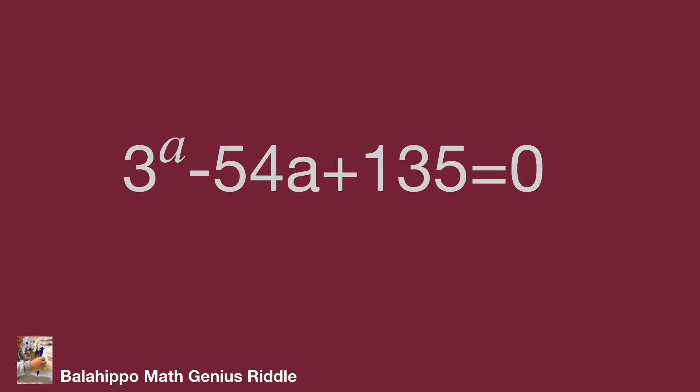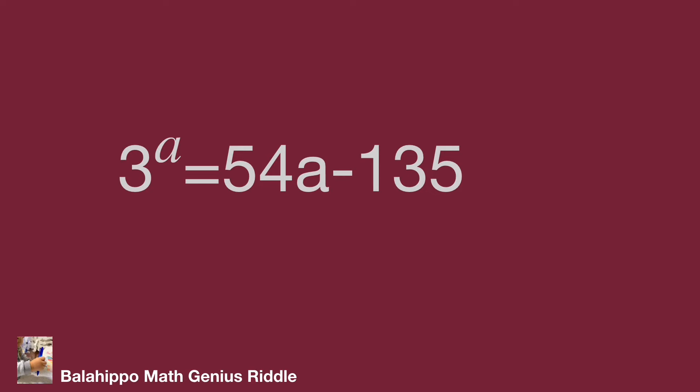The given equation is 3 power a minus 54a plus 135 equal to 0. Before we find the solution, move 54a plus 135 to the other side of the equation as 3 power a equal to 54a minus 135. Now in this new equation we find some new information from here.